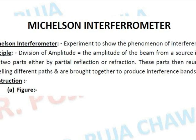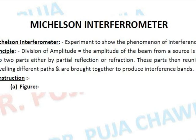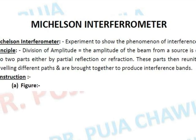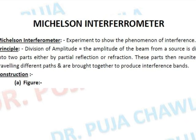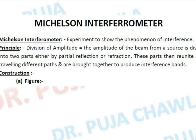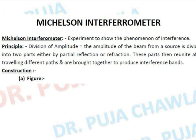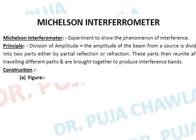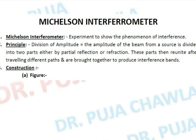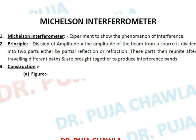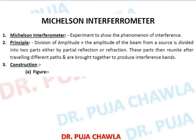Michelson interferometer is an experiment to show the phenomenon of interference. Its principle is based upon the division of amplitude. Division of amplitude means the amplitude of a beam from a source is divided into two parts — one by reflection and one by transmission. These two parts then reunite to produce an interference pattern on the screen, the same as we discussed in Newton's Rings experiment.